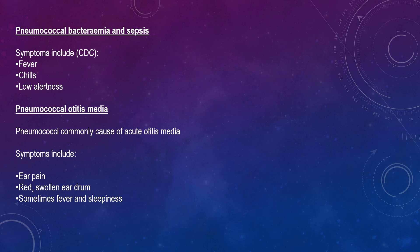Looking at pneumococcal otitis media — pneumococcal bacteria commonly cause this condition. They are found in 28–55% of middle ear aspirates. By age 12 months, more than 60% of children have had at least one episode of acute otitis media. Sinuses can also be infected, and these infections are usually mild. Some children develop repeated ear infections and may need ear tubes. Pneumococcal ear infections likely account for more than 10 million visits to doctors per year. Symptoms include ear pain, a red swollen eardrum, and sometimes fever and sleepiness.